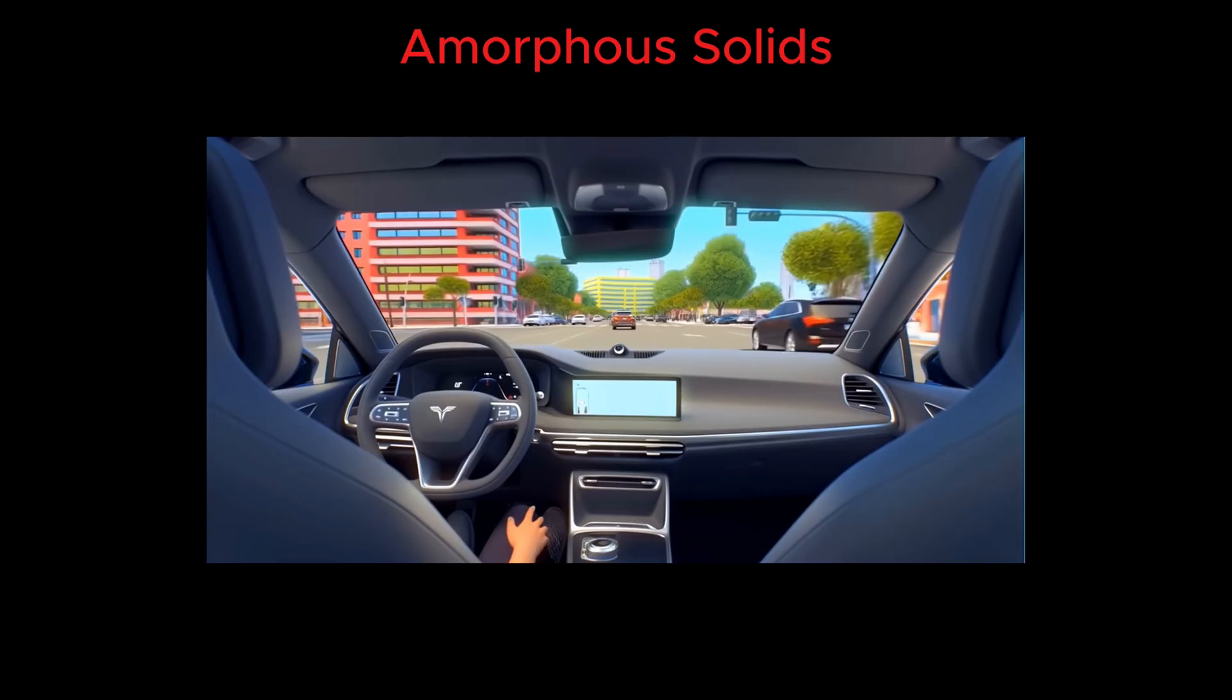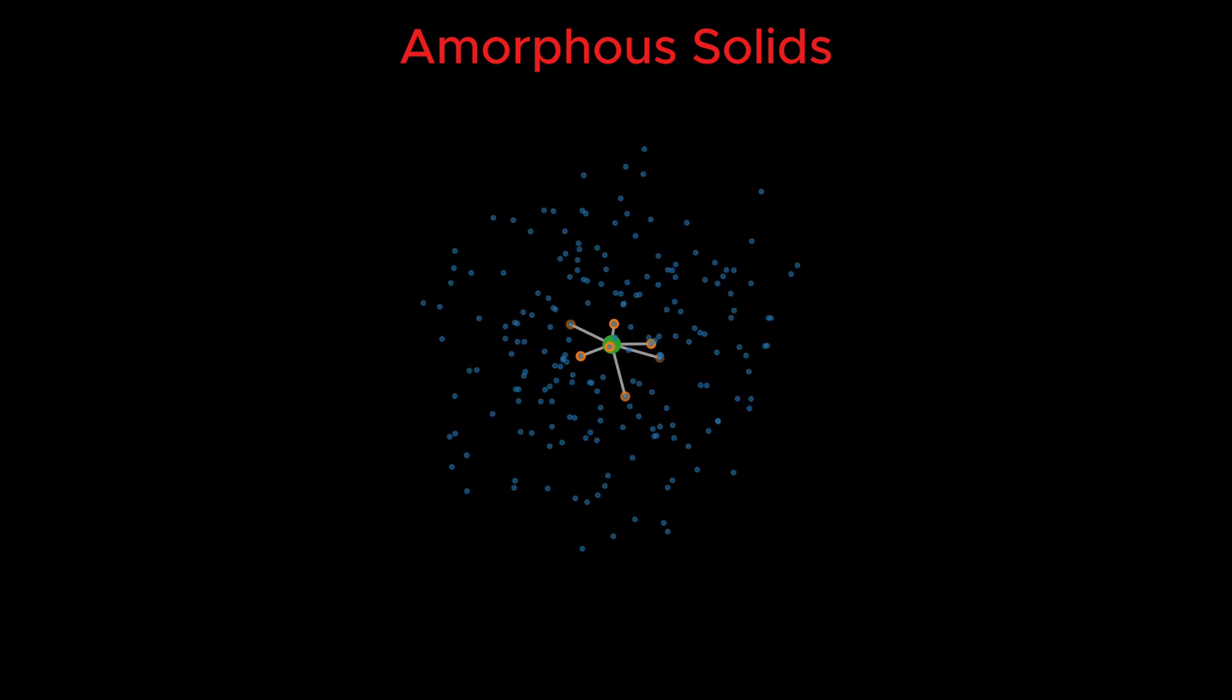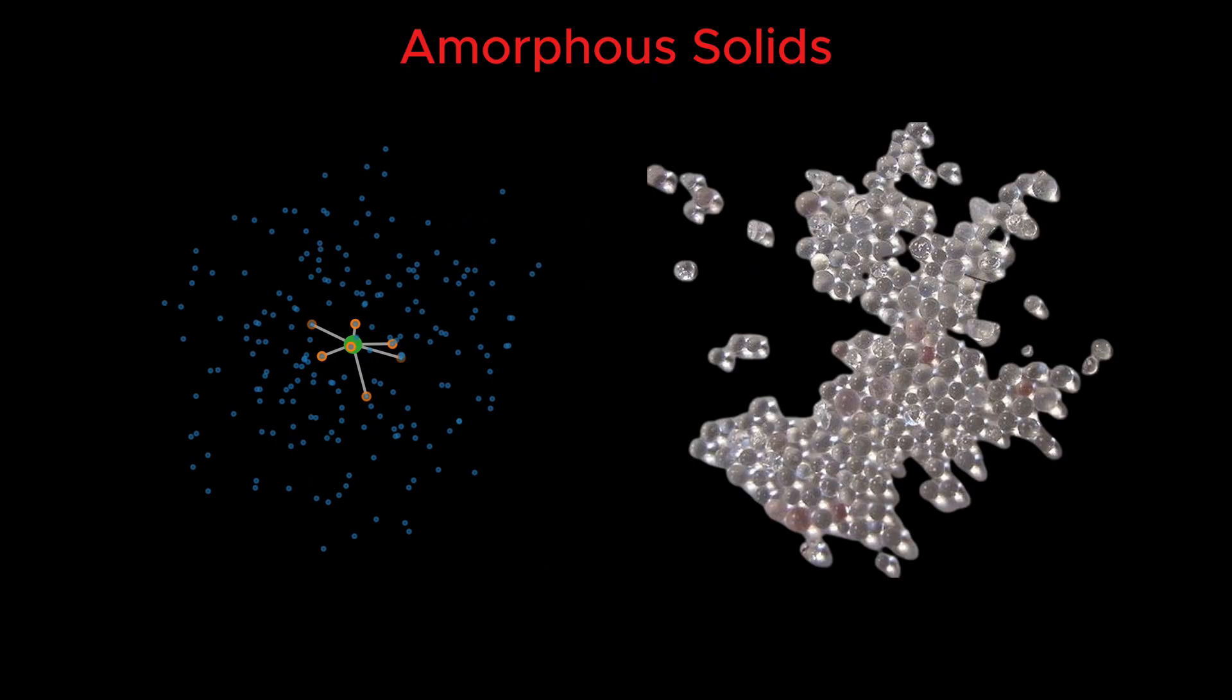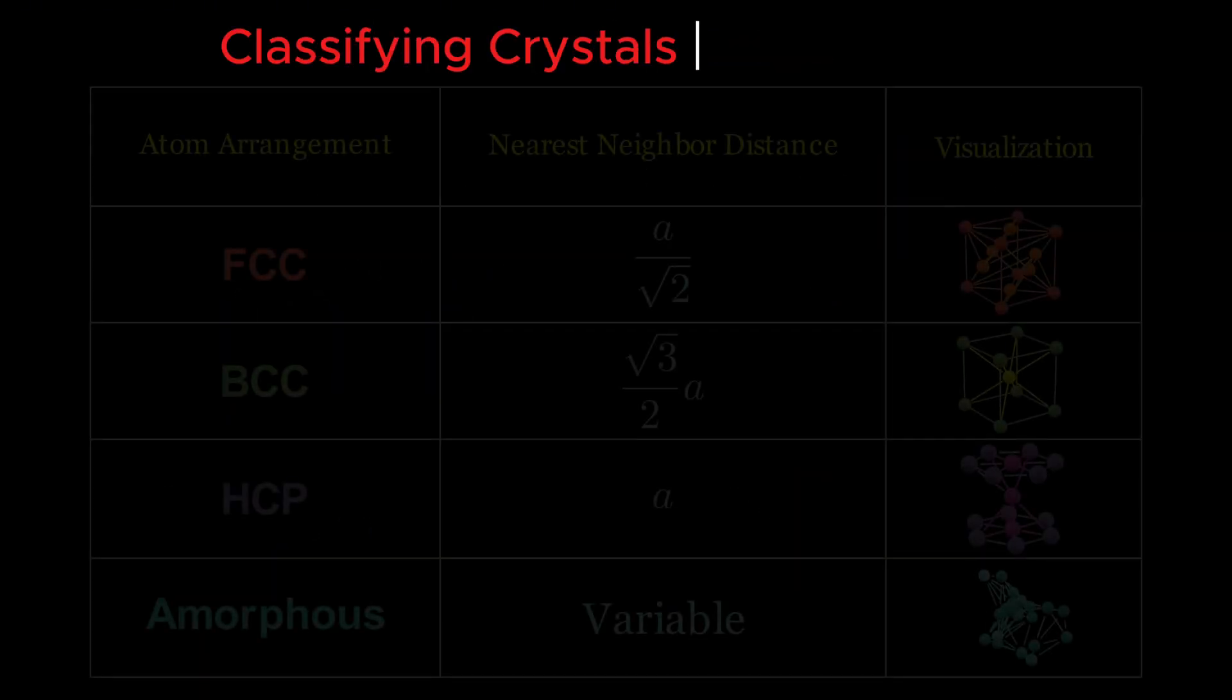The last class I'd like to discuss is called amorphous solids. Glass, like in a car windshield, plastics, and gels belong to this class. These materials have no long-range order. Atoms are arranged randomly, like a frozen liquid. There's no repeating pattern and no unit cell. The nearest neighbor distance is also variable.